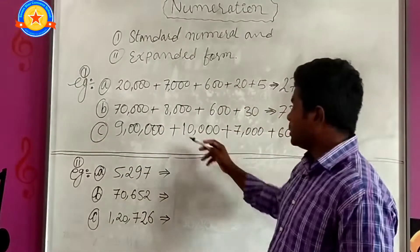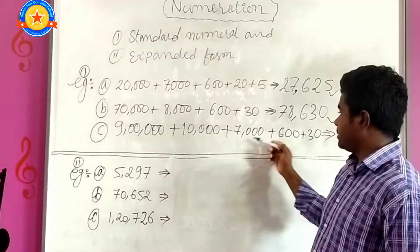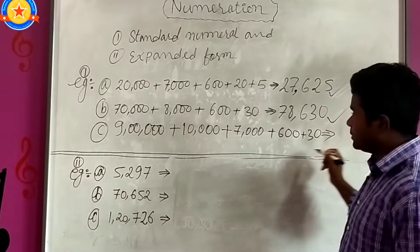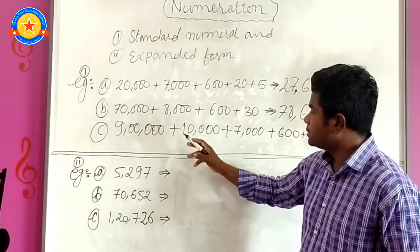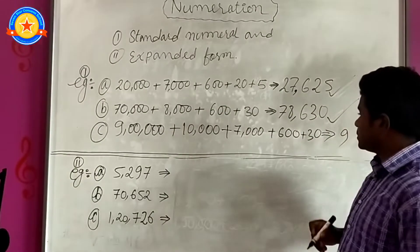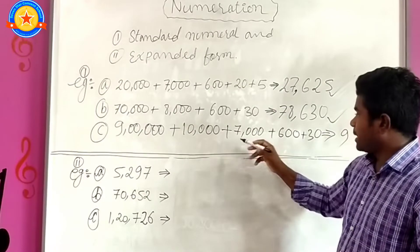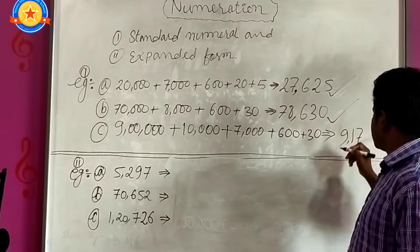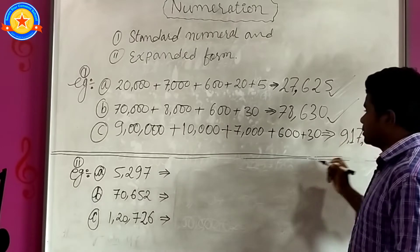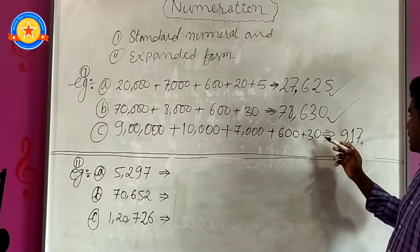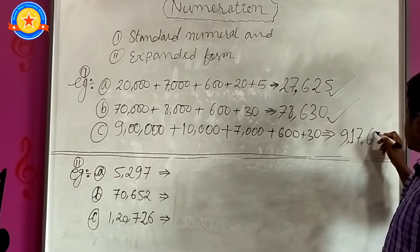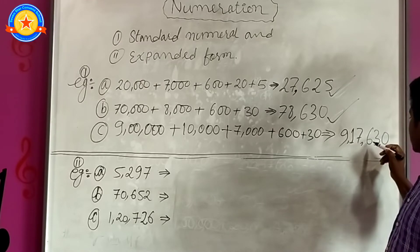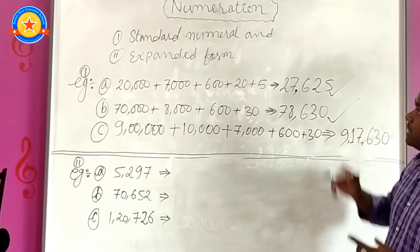Number C: 9,000 plus 10,000 plus 7,000 plus 630. The answer: we have 9,000, it will become 9. 10,000 plus 7,000 will become 17,000. Again we have 600 plus 30, so it will become 30. The answer is 9,17,630. This is the answer of standard numeral.